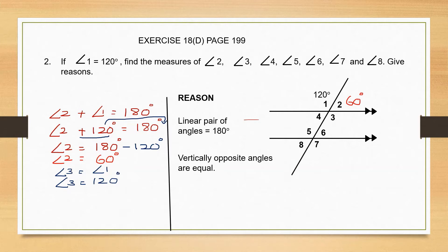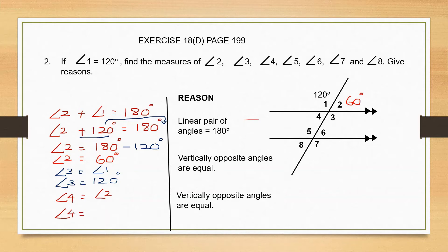Let's go to angle 4 now. If you look at angle 4 and angle 2, they are again vertically opposite angles. And vertically opposite angles are equal. So angle 4 is equal to angle 2, and angle 2 is 60 degrees — so angle 4 is also 60 degrees. So we have found: angle 2 is 60 degrees, angle 3 is 120 degrees, and angle 4 is 60 degrees.